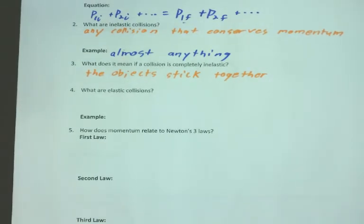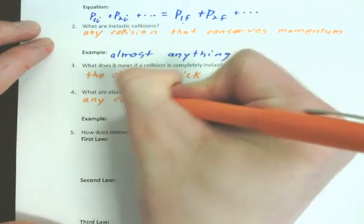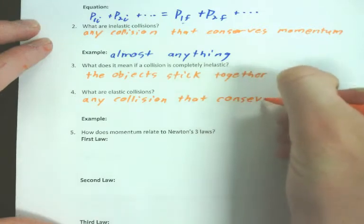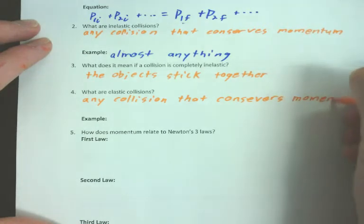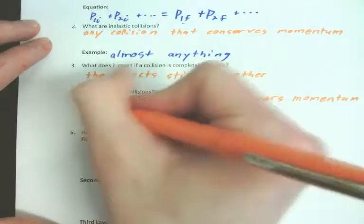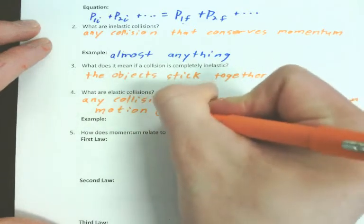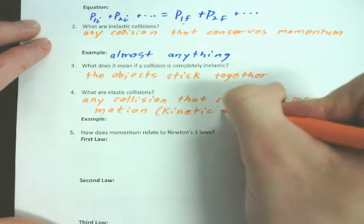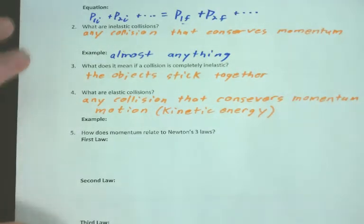What are elastic collisions? So elastic collisions are any collision that conserves momentum and motion. Now, this motion has a particular name. It's called kinetic energy. But since we haven't talked about it yet, I'm not going to require it for the definition. Just know that it needs to conserve motion. So what do I mean by that? Let me give you an example here.